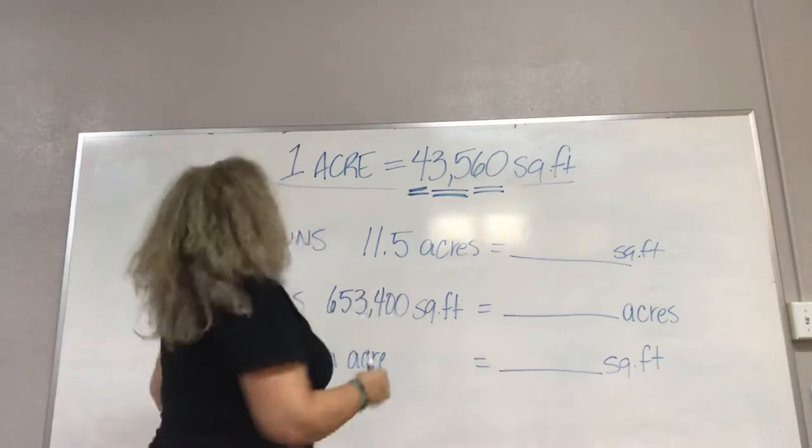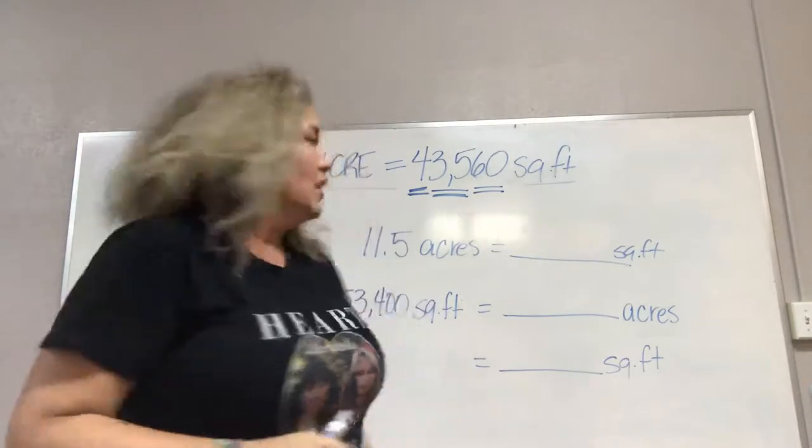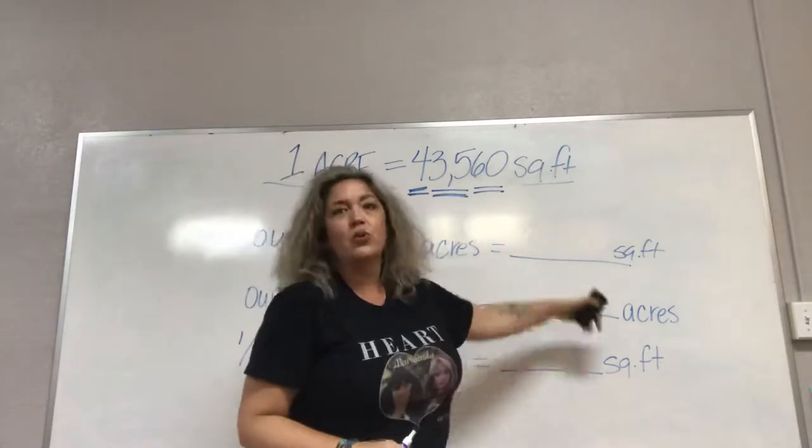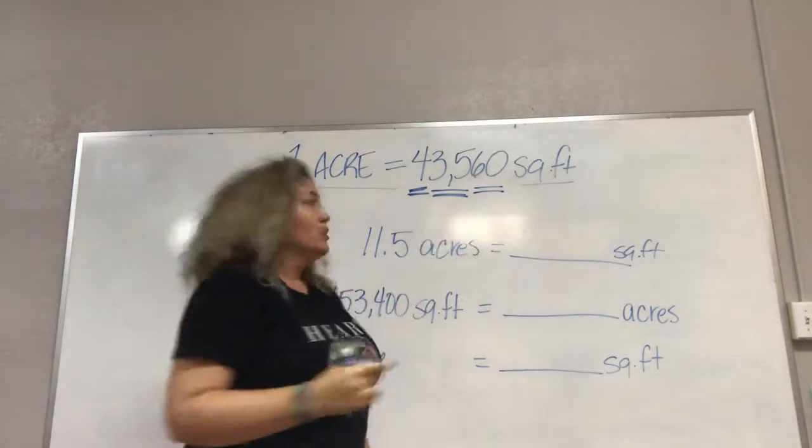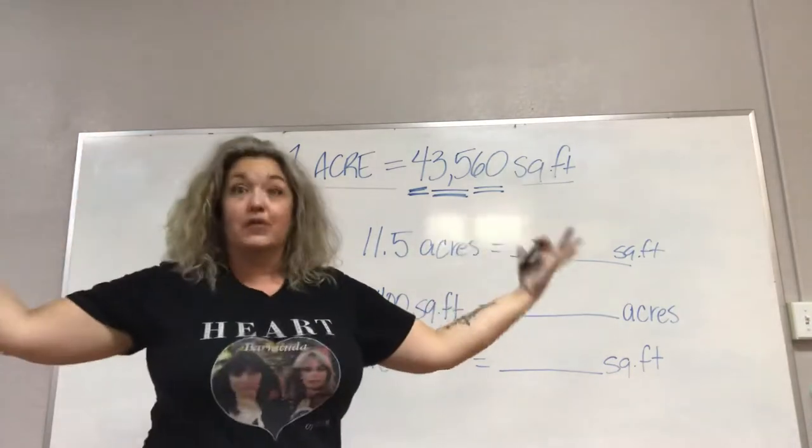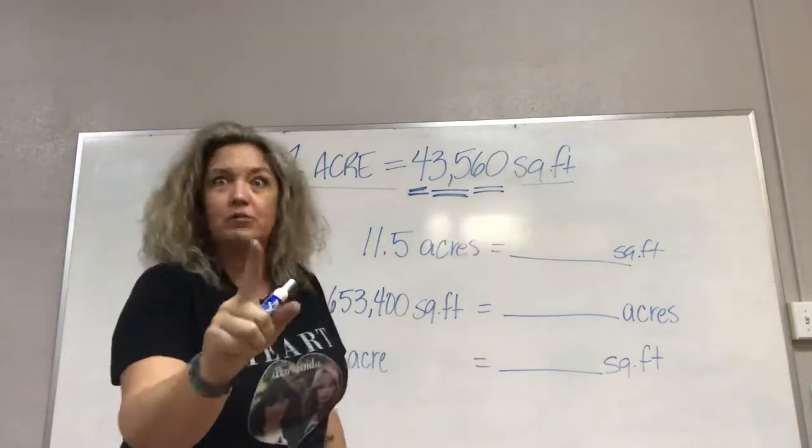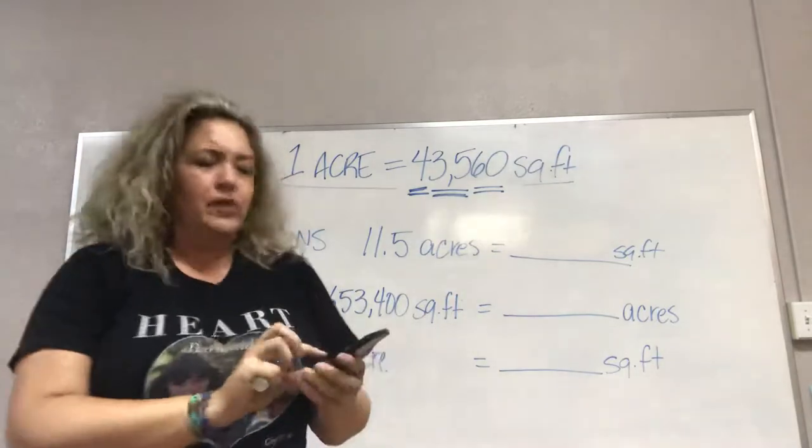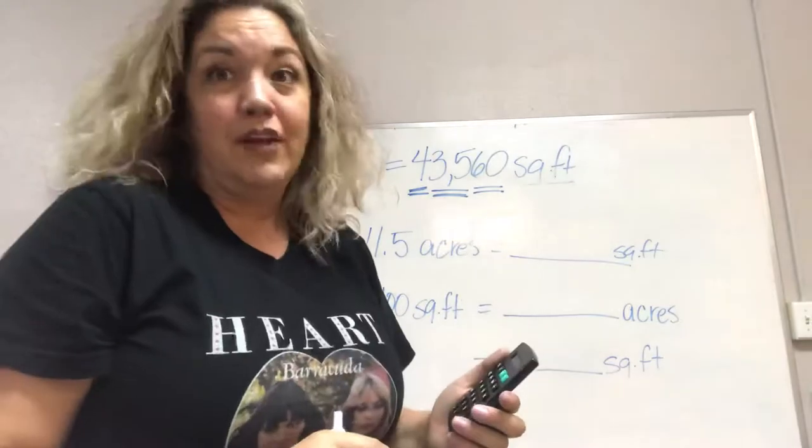Okay, so let's take this first one. A farmer owns 11.5 acres. We want to know how many total square feet that is. That's a lot of square feet. So we are using our 43,560, but since we are going from 11.5 to finding out the big number of how many square feet, we are going to multiply. So 11.5 times 43,560.